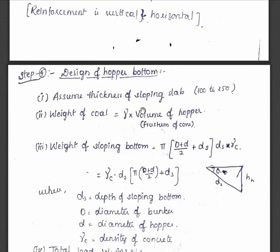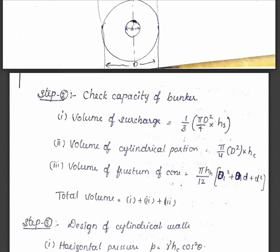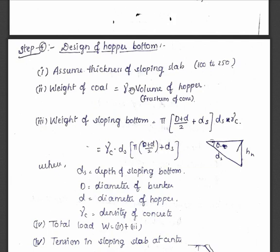The next step is the design of the hopper bottom. Since the cylindrical walls are subjected to horizontal pressure only, the hopper bottom bears the entire load — the total weight acts on the sloping sides of the hopper bottom. Assume the thickness of the sloping slab up to 250 mm; beyond that, improve the reinforcement instead of increasing the thickness. The weight of the coal is the unit weight multiplied by the volume of the hopper, as calculated earlier.